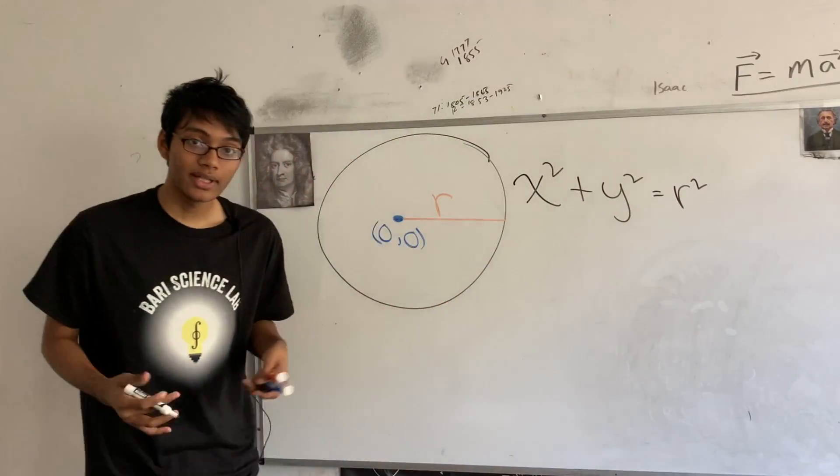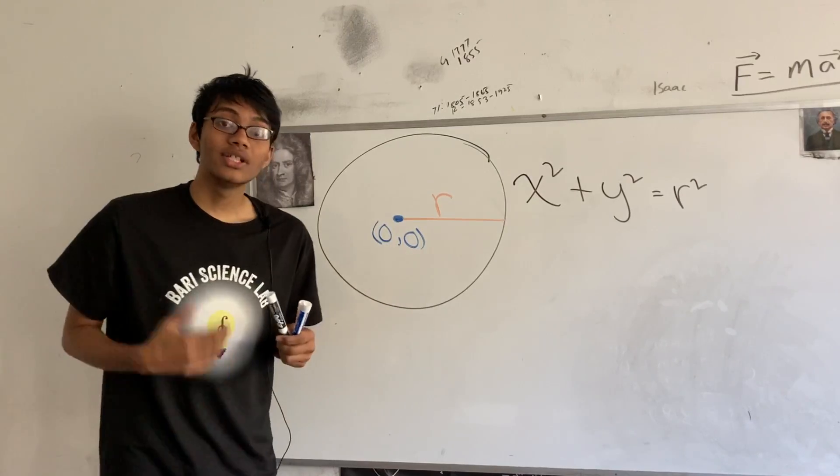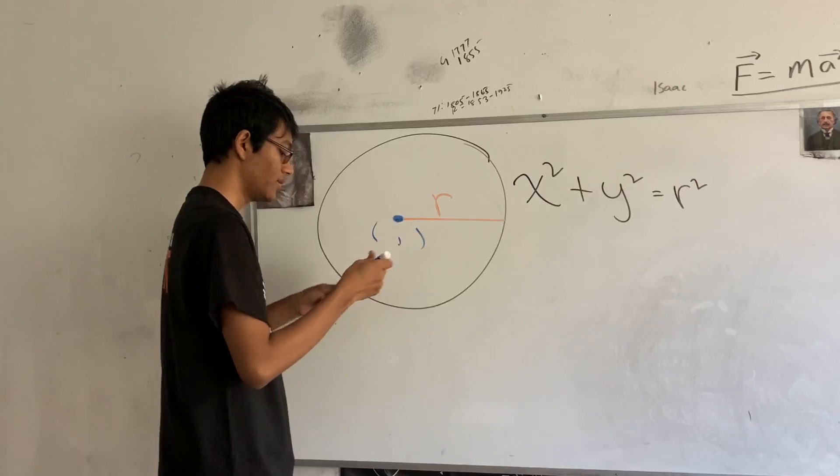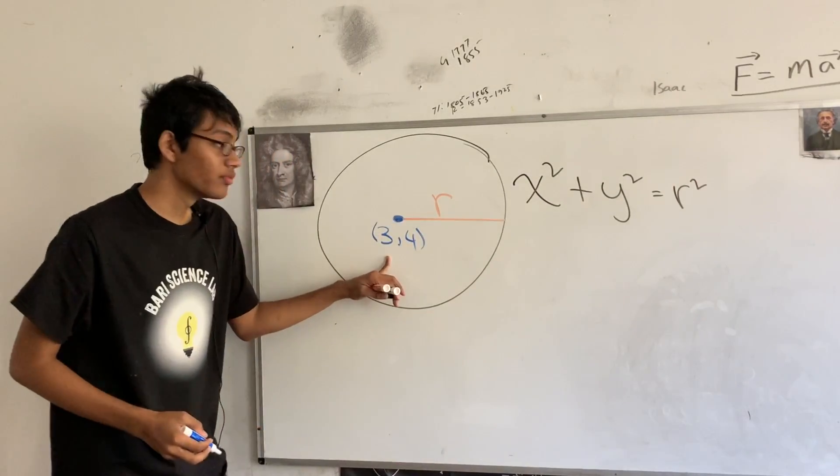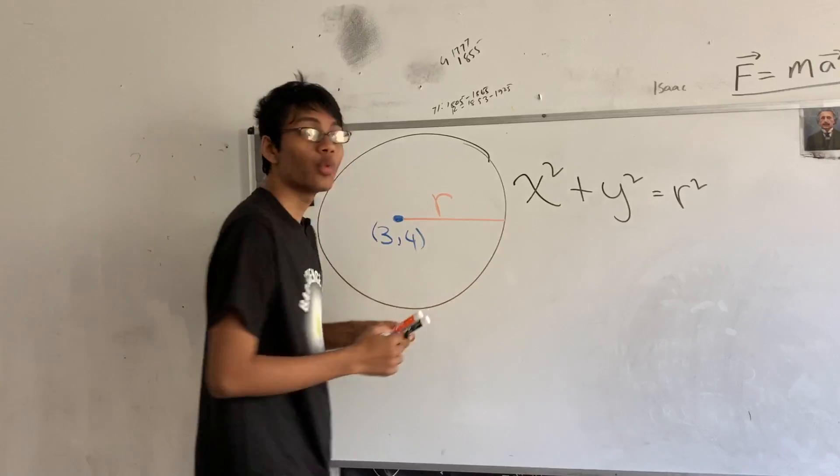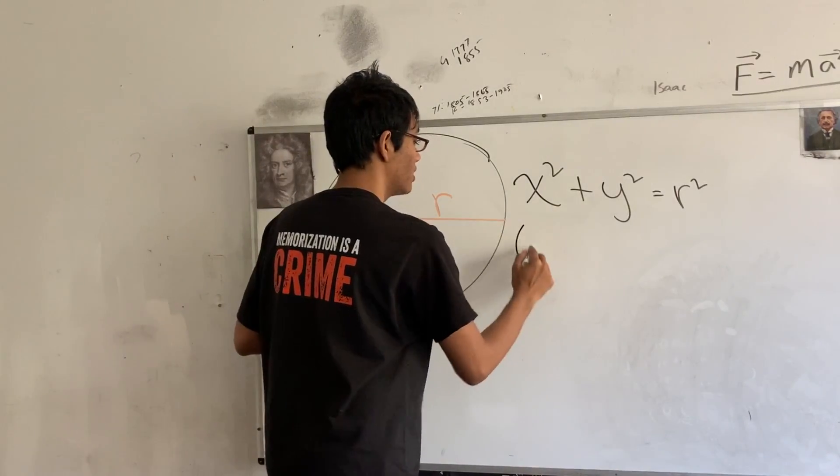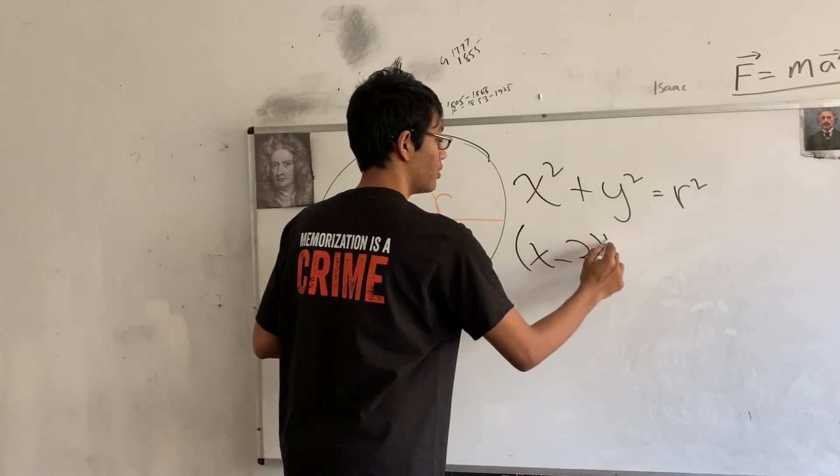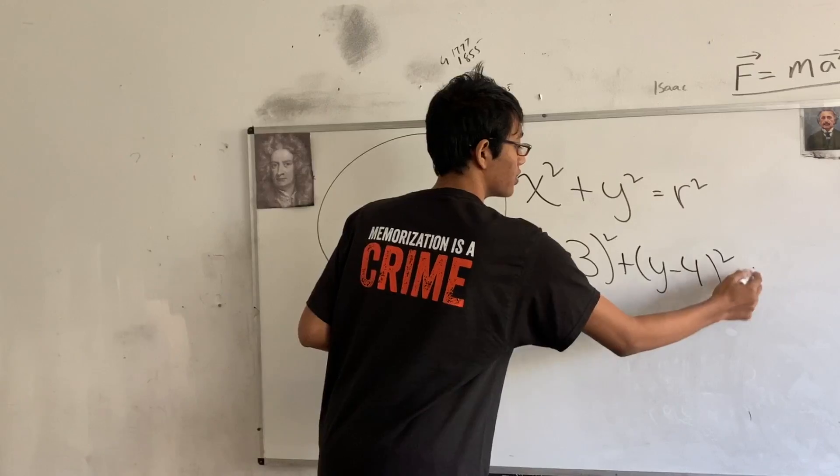Now, you can complicate this a bit by incorporating a center different than the origin. So, let's say you have a center like, I don't know, 3 comma 4, right? What's going to be the equation of this circle? Well, instead of x squared plus y squared, we're now going to incorporate that different center. How? Well, we're going to put x minus 3 squared plus y minus 4 squared equals r squared.